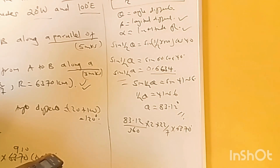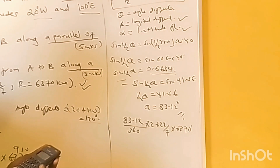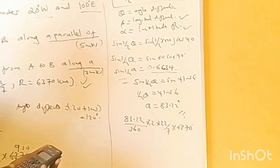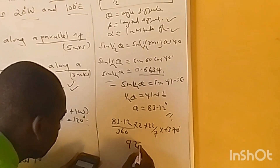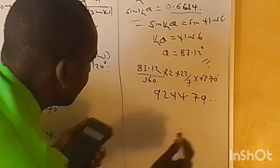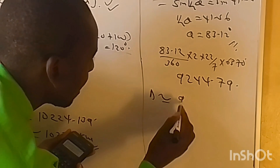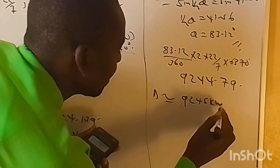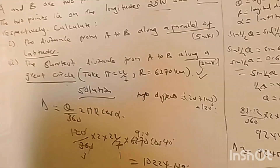Substituting theta into the great circle distance formula: distance = (83.12/360) × 2 × (22/7) × 6370. Using a calculator: 83.12 × 44 × 6370 ÷ 360 ÷ 7 = 9,244.79 kilometers, which to the nearest whole number is 9,245 kilometers. This is indeed less than 10,224 km, confirming it is the shorter great circle route.